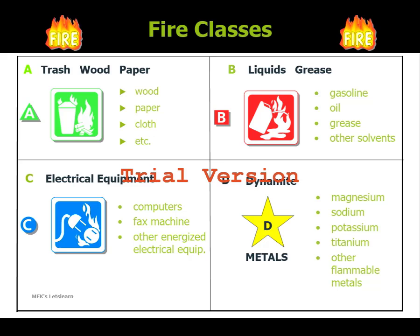Class D — 'D' stands for dynamite. All metals fall under this classification. Examples are magnesium, sodium, potassium, titanium, and other flammable metals.